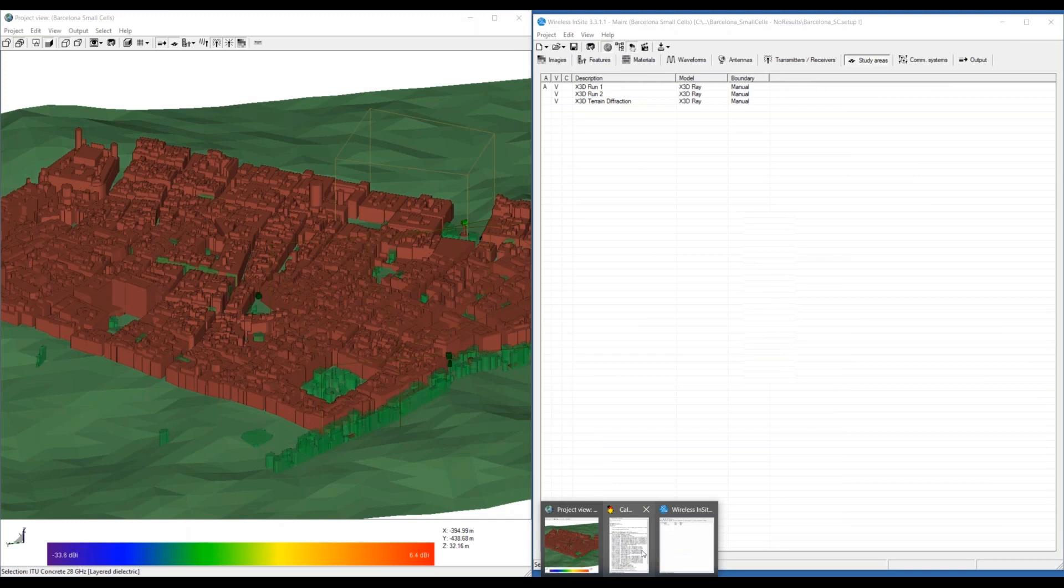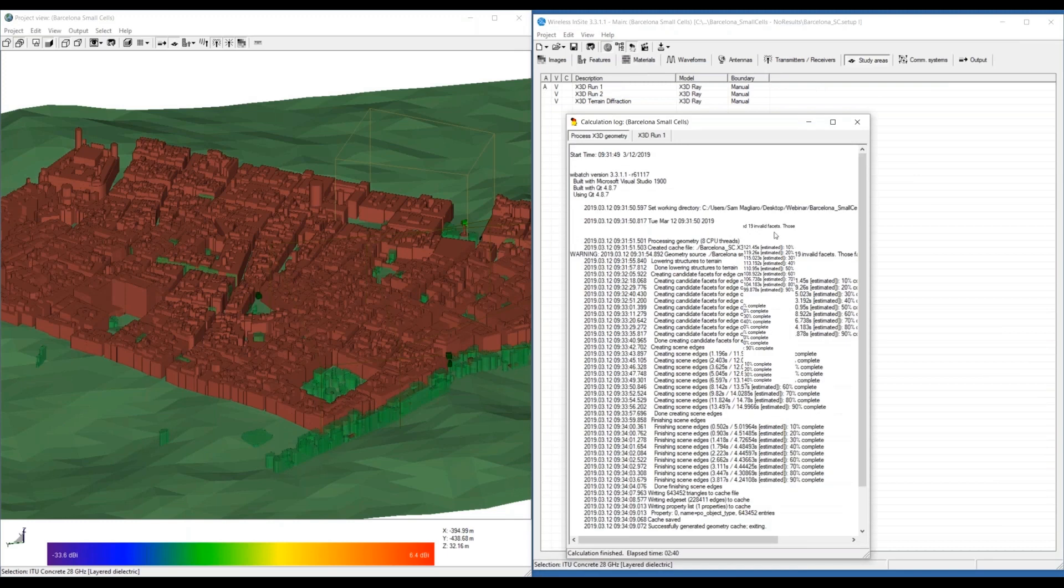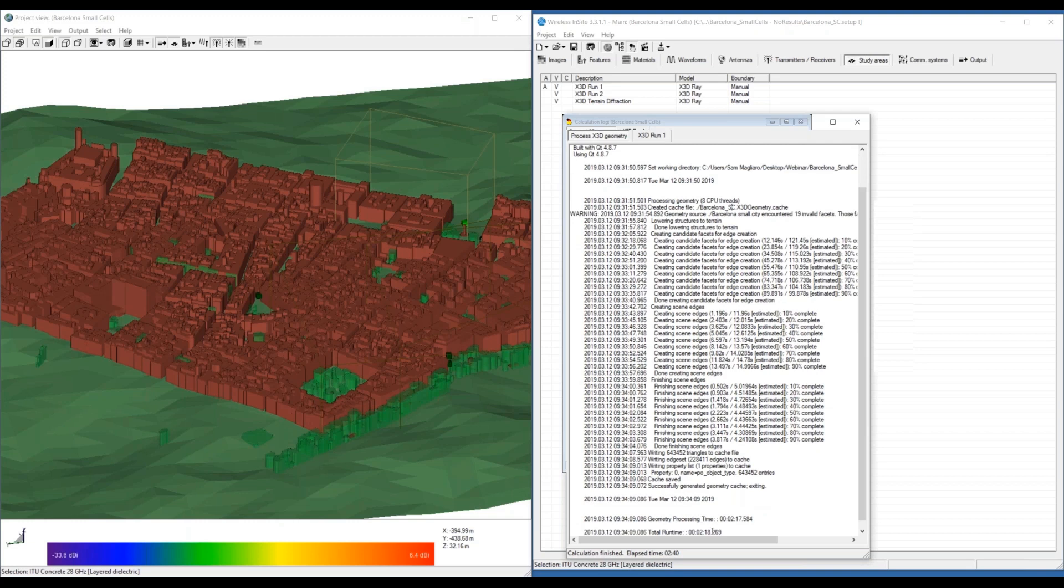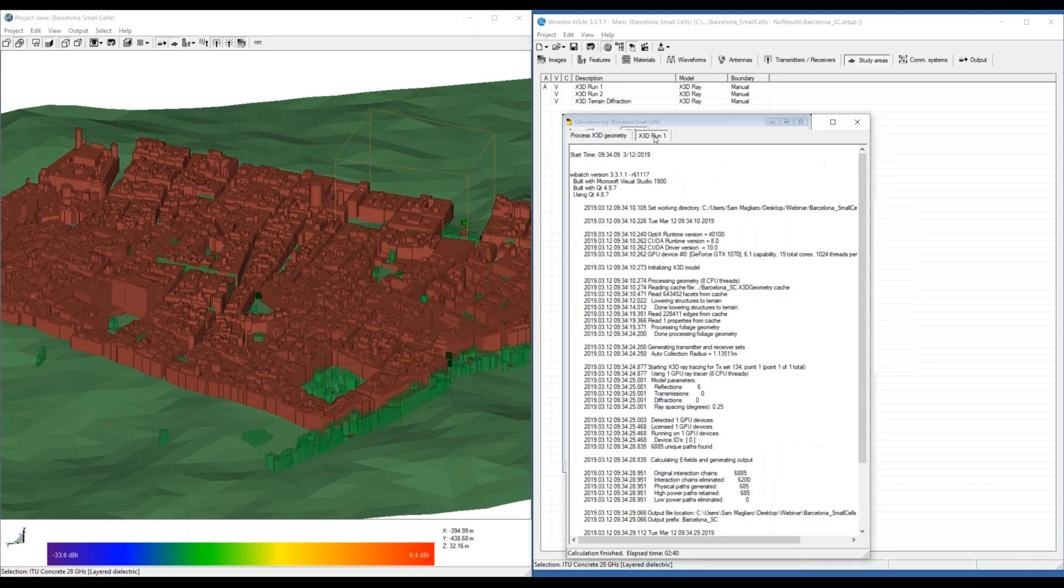This is the calculation log from the previous run that generated the cache originally. We can see that the geometry caching portion is its own step. And this tab up here, it creates the cache file in the project directory here. In this case, it took 2 minutes and 18 seconds to generate the geometry cache. And then our X3D study area runs and it reads in the cache file rather than processing the geometry at the beginning of the calculation. On subsequent runs, once the cache file is already created, it will skip immediately to this X3D run.